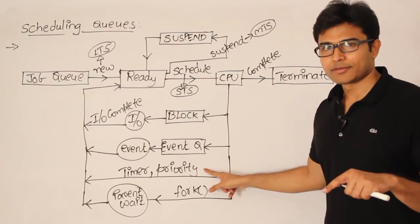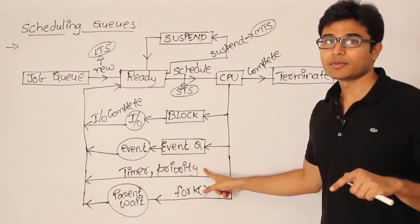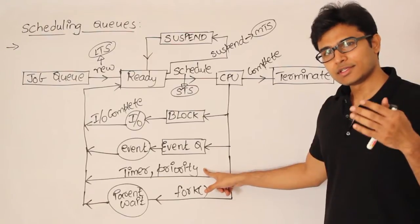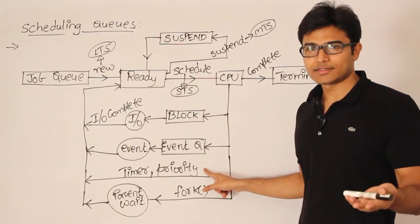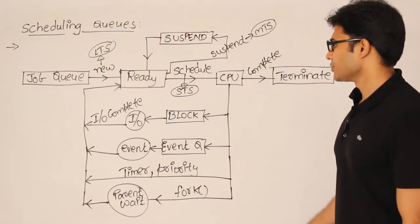Or sometimes, whenever it is executing, a process with high priority will be available now. Therefore, since the priority of the current process is less, we might actually push it back to the ready queue.